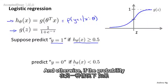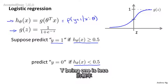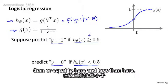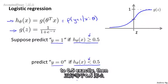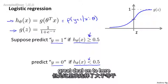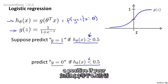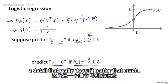And otherwise, if the estimated probability of y being 1 is less than 0.5, then let's predict y equals 0. I chose a greater than or equal to here and less than here. If h of x is equal to 0.5 exactly, we could predict positive or negative, but I put a greater than or equal to here, so we default to predicting positive if h of x is 0.5 — but that's a detail that really doesn't matter that much.